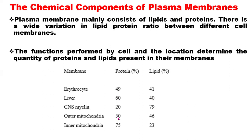The outer mitochondrial membrane has 50% protein and 46% lipids, while the inner mitochondrial membrane has 75% protein and only 23% lipids. This will not surprise you because the inner mitochondria has a lot of enzymes where respiratory metabolism is taking place — many enzymes doing the metabolic process of energy production. Mitochondria is the powerhouse that produces ATP, so 75% protein composition is found in the inner mitochondrial membrane.